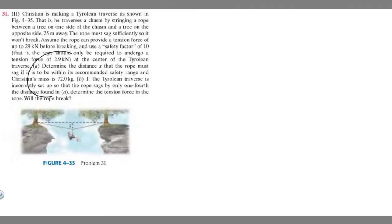In this problem, we're told to determine the distance X that the rope must sag if it is to be within the recommended safety range, and Christian's mass is 72 kilograms. Part B says if the traverse is incorrectly set up so that the rope sags by only one-fourth the distance found in A, determine the tension force in the rope. Will the rope break?